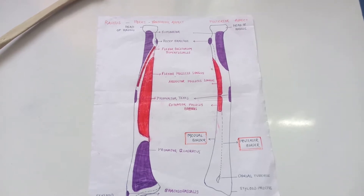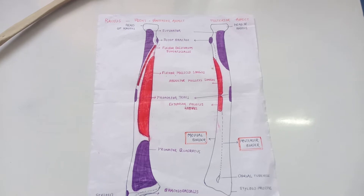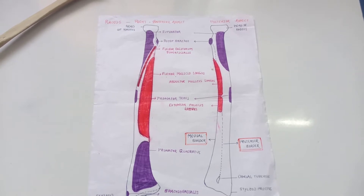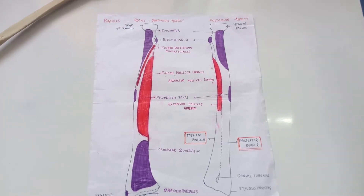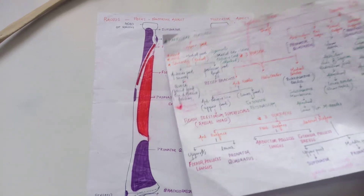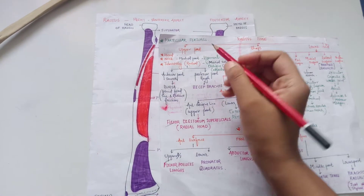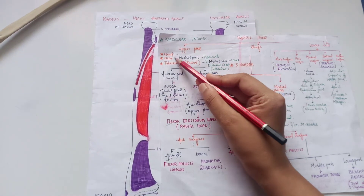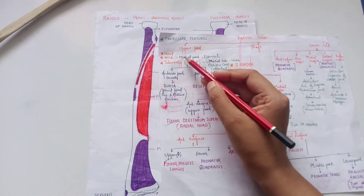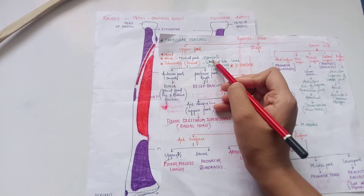Hello everyone, today we will learn about the particular features of the radius bone. It has an upper end, shaft, and lower end. In the upper end, it has a head, neck, and tuberosity. In the medial part, it has a ligament tuberosity.